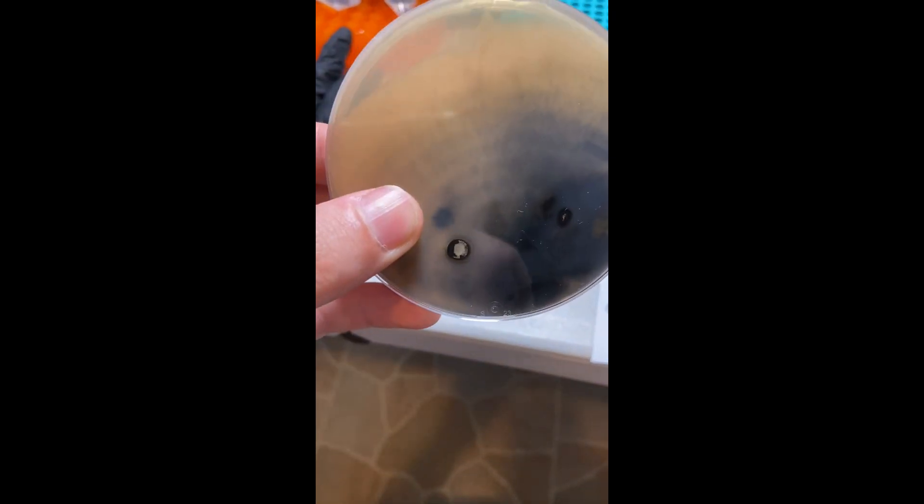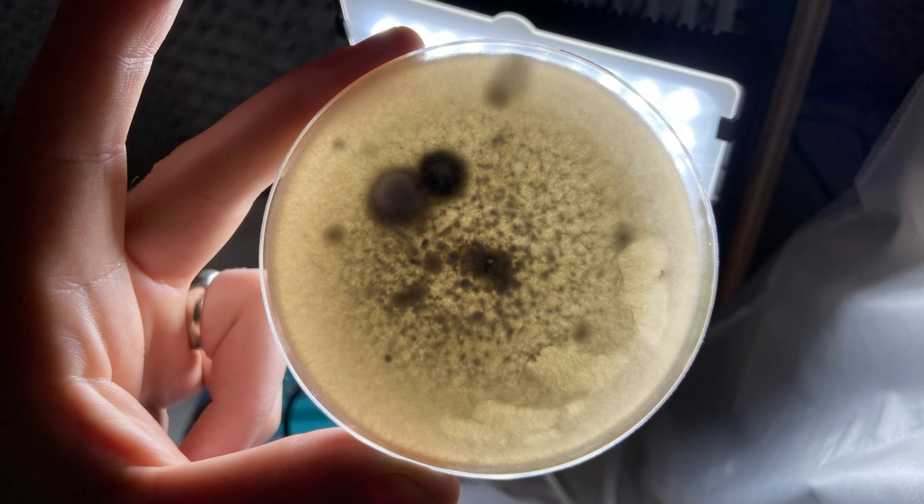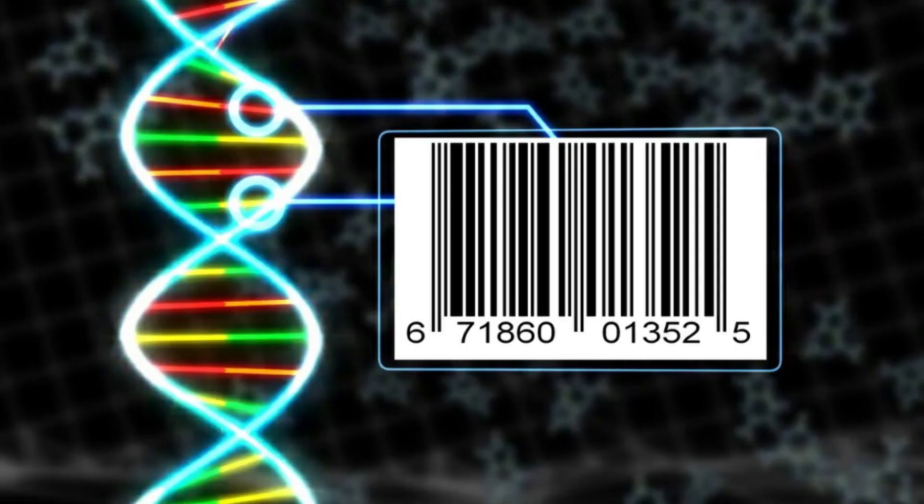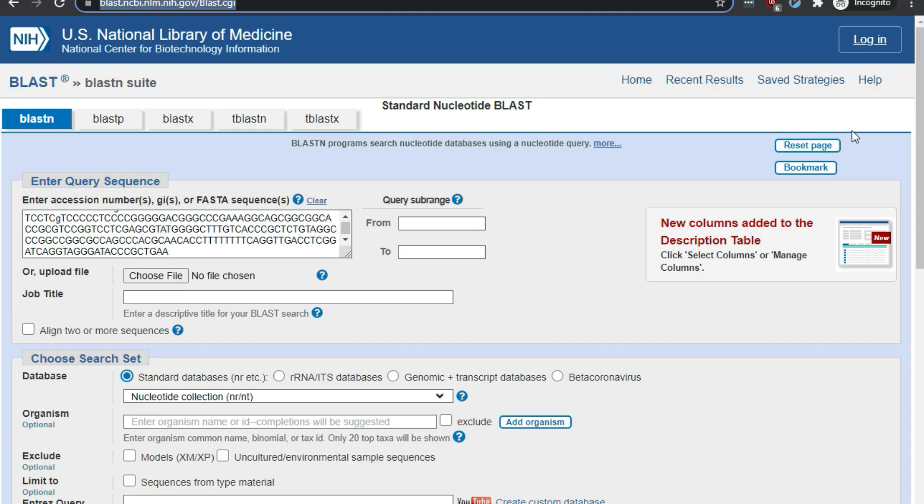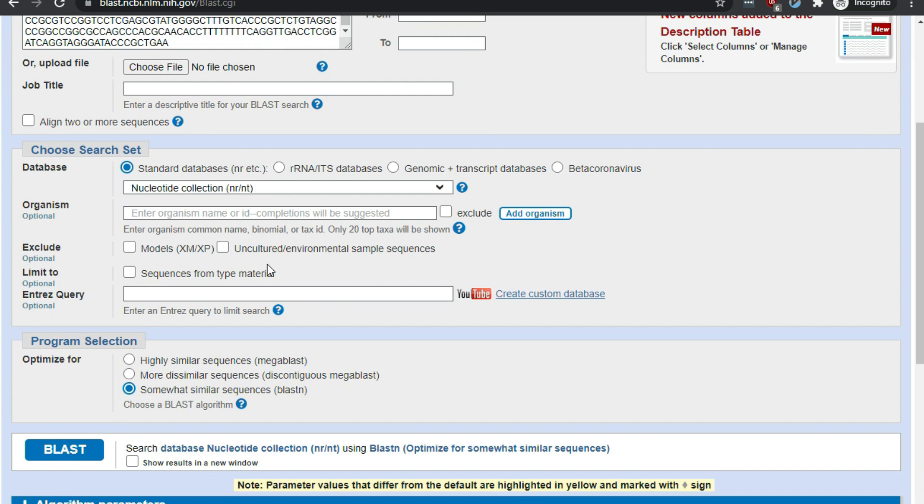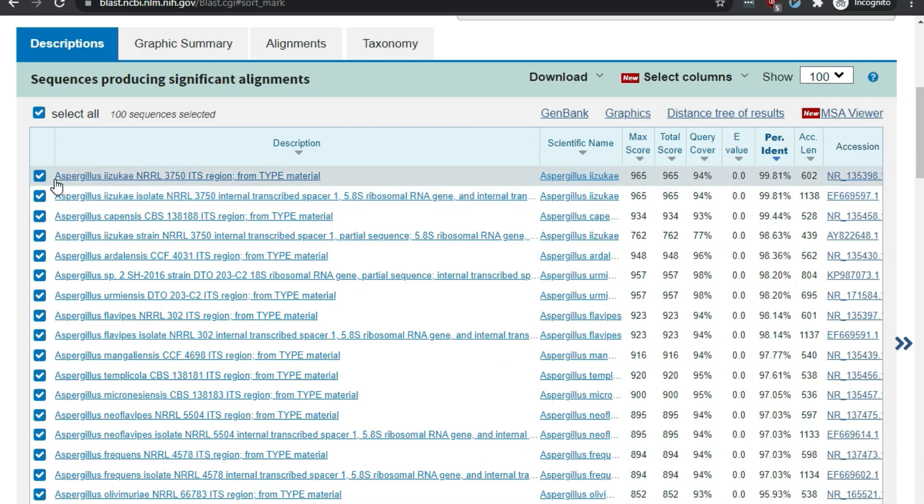But even after a week or two, it had not produced any conidia or other structures that could be used to properly identify it. This is where a tool called DNA barcoding can become quite helpful. By extracting and amplifying a small sequence of ribosomal DNA in the internal transcribed spacer region, or ITS, of the genome, we can compare the sequence with reference sequences of a known type from public databases such as GenBank, and we can make some reasonable conclusions about the identification of the organism.